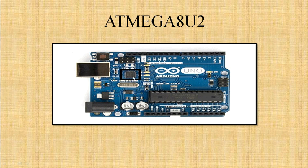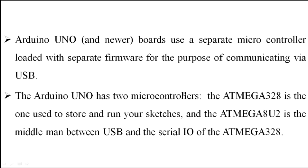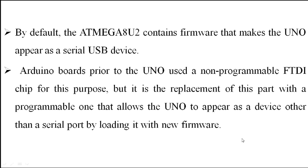There are two main chips: the ATmega328 and the ATmega16U2. The ATmega328 is the one used to store and run your sketches. The ATmega16U2 acts as the middleman between USB and the input/output of the ATmega328. The ATmega16U2 contains firmware that makes the Uno appear as a CDC HID device, and it is a replacement for the previous non-programmable chip used on earlier Arduino boards.